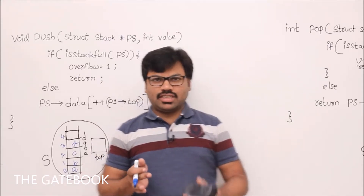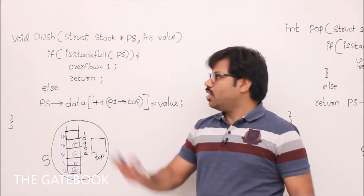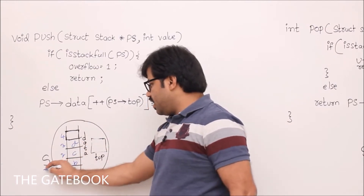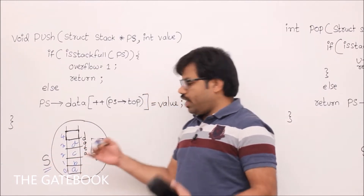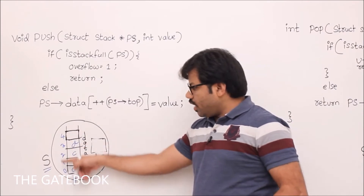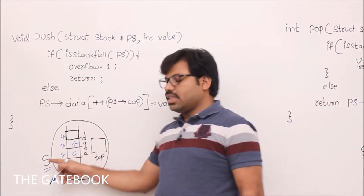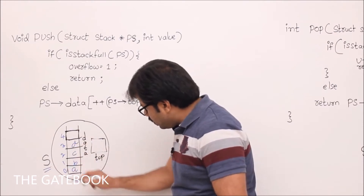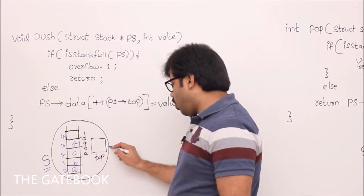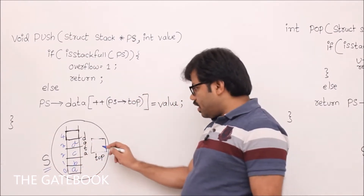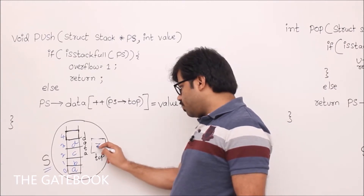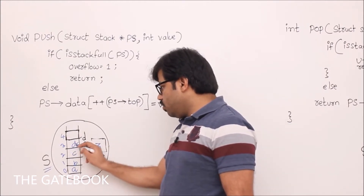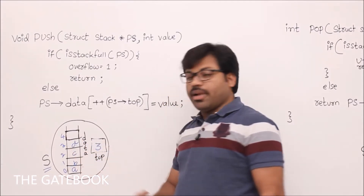Let's implement push and pop operations. I'll start with the push operation. We already have a stack S somewhere, and we can access it by passing the address of this structure. We have stack S with an array and one top variable. Currently, top is showing the top index — let's say the reset value is 3, so top is maintained at 3.